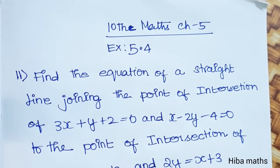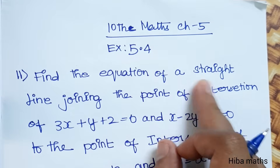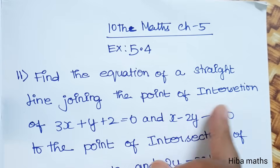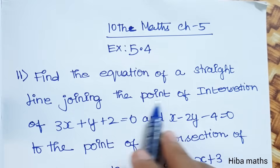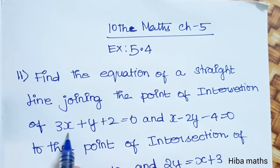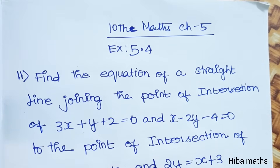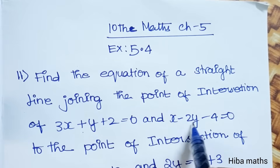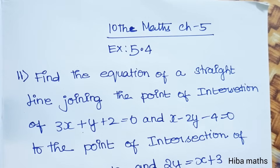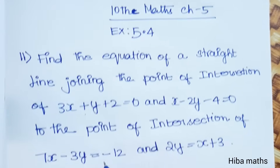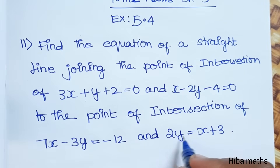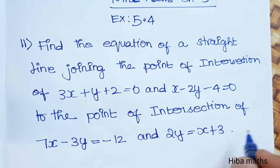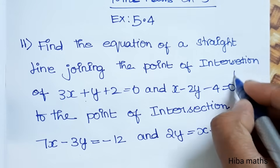Hello students, welcome to Hibamax 10 Standard, Chapter 5, Exercise 5.4, 11th question. Find the equation of the straight line joining the points of intersection of 3x + y + 2 = 0 and x - 2y - 4 = 0, to the point of intersection of 7x - 3y = -12 and 2y = x + 3.